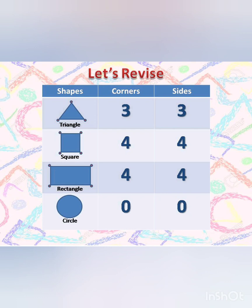A square has four corners and four sides. A rectangle has four corners as well as four sides. As you can see, there is no red dot on a circle, so it has zero corners as well as zero sides.